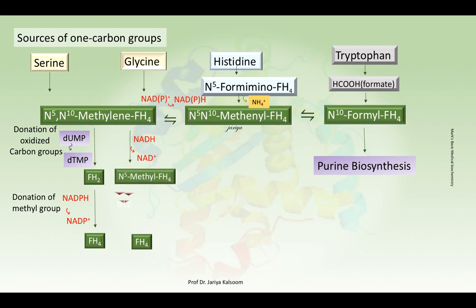This methyl group, in the presence of B12, serves to convert homocysteine to methionine. Methionine in turn plays its part in one-carbon metabolism through the donation of its methyl group to various acceptors in the presence of vitamin B12.